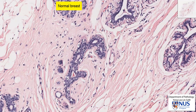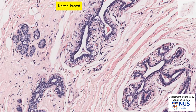Here is a high magnification view of a normal breast duct. Normally, breast ducts and lobules are lined by two-layered or bilayered epithelium: the inner luminal cells and the outer layer of basal cells. If we see bilayered epithelium lining ducts and lobules, it is almost always indicative of benign breast tissue.